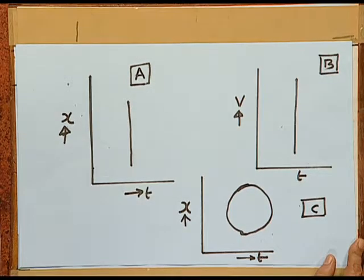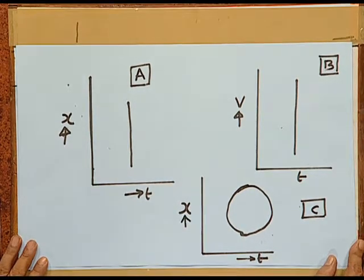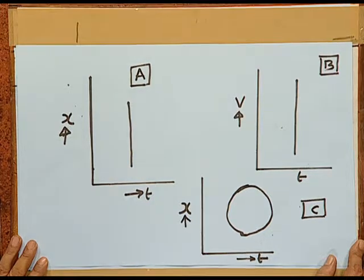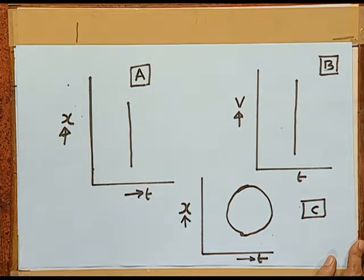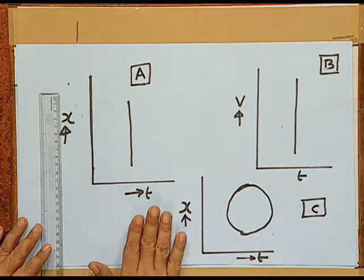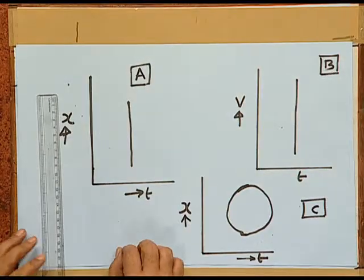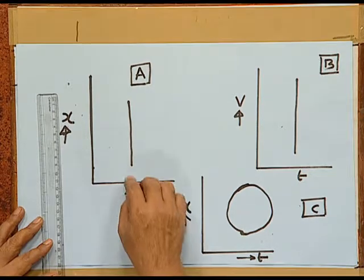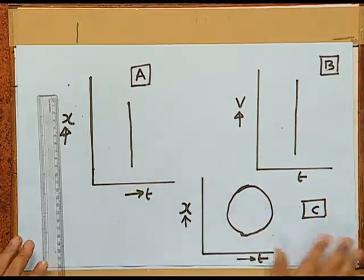Look at graphs A, B, and C. In graph A, position variation with time is represented by a line parallel to the x-axis — meaning at any given time, position goes on changing. But at any time an object can have only one position in the universe. So is this graph possible? Think about it.